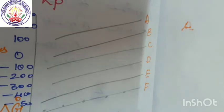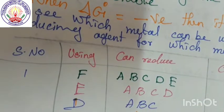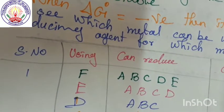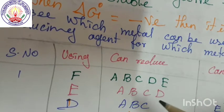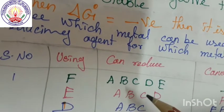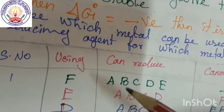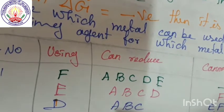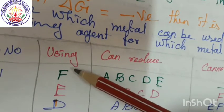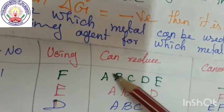Now, we shall see which metal can be used for which reducing agent. We saw that F is positioned just below, and the metal oxide is reduced using that line. For example, F can reduce A, B, C, D — the metal oxides that are above it in the diagram.